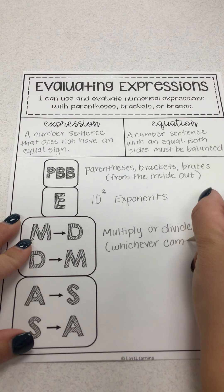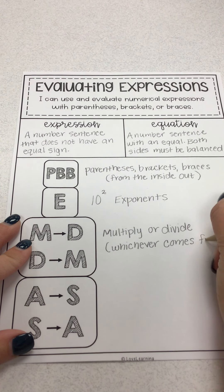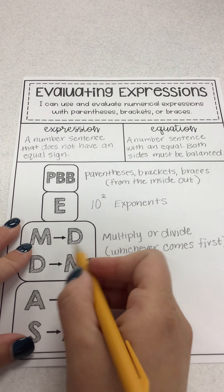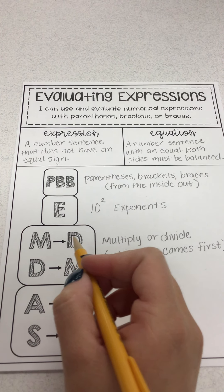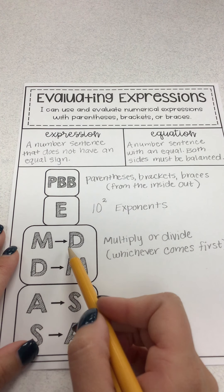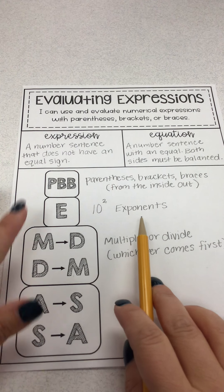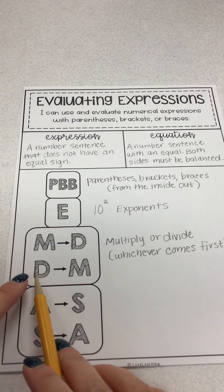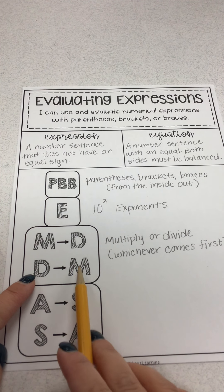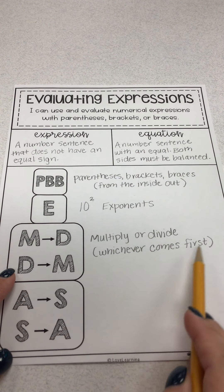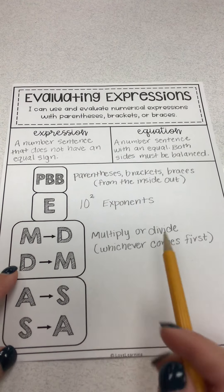And it's important to remember, and there's arrows over here to remind you, you always work left to right. So it's like when you read a book. So if I have a multiplication problem that comes before a division problem when I'm moving left to right, you do multiply first. If I have a division problem and then a multiplication problem, moving left to right, I do division first. So that's what this means, whichever comes first.